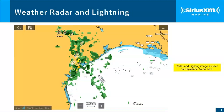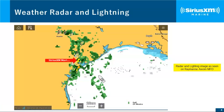Our most commonly used and popular feature is weather radar and lightning. This screen is probably very familiar because you see similar screens on weather apps or watching TV. We're looking at a storm system working through the Gulf, with various levels of intensity. You also see lightning strikes, which show you exactly where the lightning is in relation to your boat.